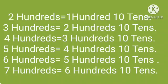2 hundreds is equal to 20 tens. 3 hundreds is equal to 30 tens. 4 hundreds is equal to 40 tens. 5 hundreds is equal to 50 tens. 6 hundreds is equal to 60 tens. And 7 hundreds is equal to 70 tens.